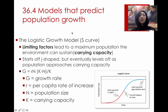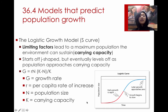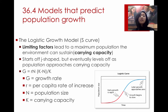The second model is called the logistic growth model, or the S-shaped curve. This is a much more realistic model, based on the idea that there are limiting factors — environmental factors that prevent maximum population growth — which leads to something called the carrying capacity. The carrying capacity is the maximum population that the environment can sustain. It tends to start off as a J-shaped curve when the population is small, but growth starts to slow down as the population approaches its carrying capacity, and once it reaches carrying capacity, it doesn't grow anymore.